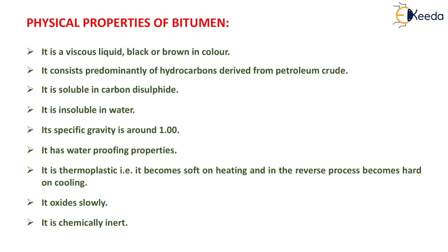Now the physical properties of bitumen. It is a viscous liquid, black or brown in color. It consists predominantly of hydrocarbons derived from petroleum crude. It is soluble in carbon disulfide and insoluble in water. Its specific gravity is around 1. It has waterproofing properties. It is thermoplastic, meaning it becomes soft on heating and hard on cooling. It oxidizes slowly and is chemically inert.